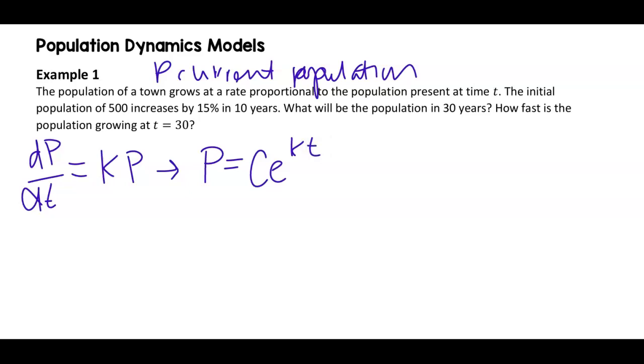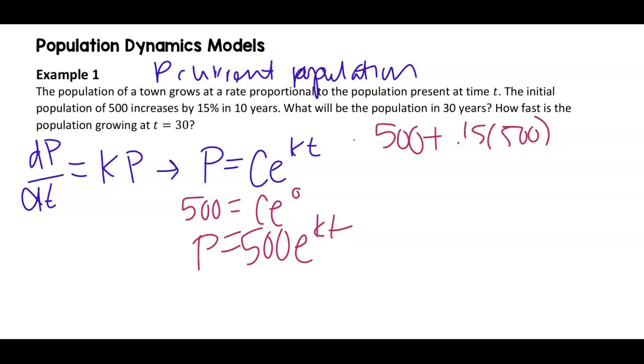The initial population of 500, oh, very small town. Now remember when we don't have any plus or minus over here, it is okay to then just say that that's probably our c value, but let's just double check. Yes. So that's going to be our c. So I know that p equals 500 e to the kt. So here's my second one increases by 15% in 10 years. If it increases by 15%, then it's 500 times 1.15. And I get that that is 575 in 10 years.